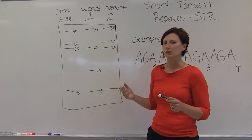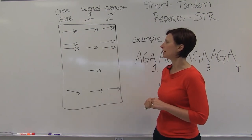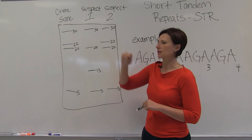Like I said, the FBI uses 13. And so this person could have committed the crime while this person could not.